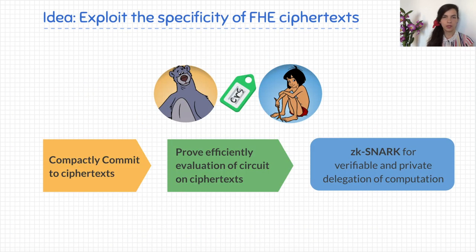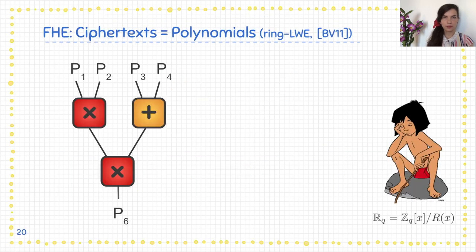How are we doing that? The idea is to exploit the specific structure of fully homomorphic encryption ciphertexts. Like that, we can compactly commit to those ciphertexts and prove very efficiently the evaluation of some circuit on the ciphertexts, and this will lead to zero-knowledge SNARKs for verifiable and private delegation of computation.